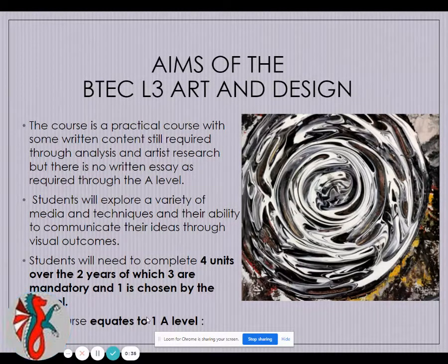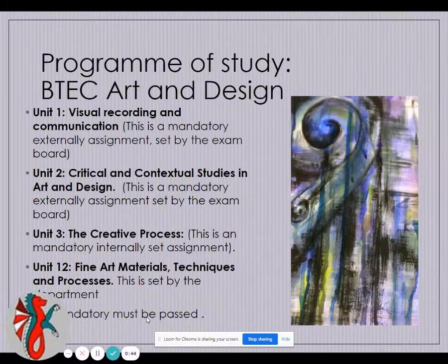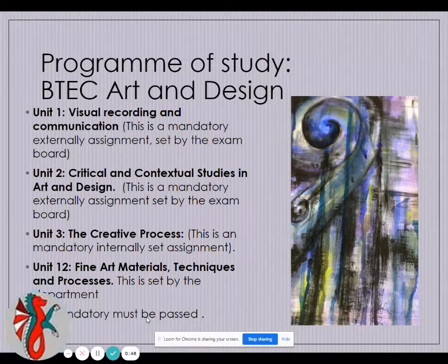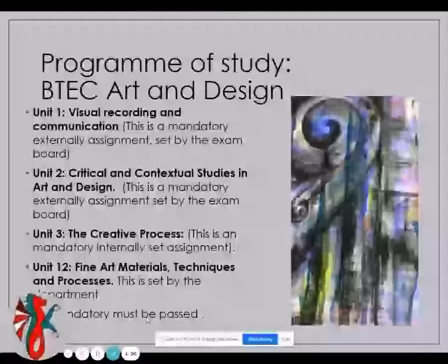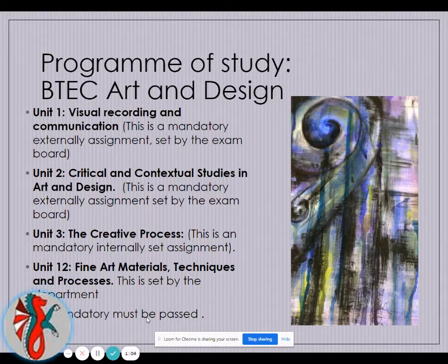Over the two years you will complete four units, three of which are compulsory and mandatory and one is optional. This course equates to one A-level. Through the four units, you will do Unit 1: Visual Recording, which you complete in Year 13. It is an external assignment set by the exam board with a theme of their choice, predominantly drawing and developing an idea based on an artist and producing an outcome. Unit 2: Critical and Contextual Studies in Art and Design is again a mandatory unit.